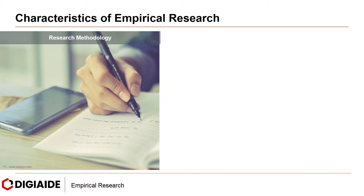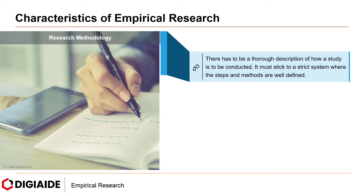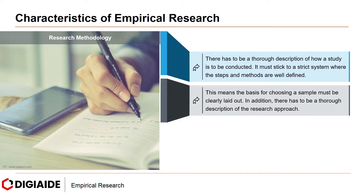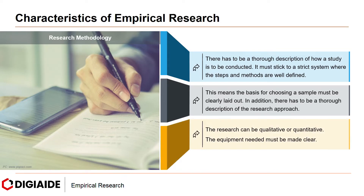Moving on to next, research methodology. There has to be a thorough description of how a study is to be conducted. It must stick to a strict system where the steps and methods are well defined. This means the basis for choosing a sample must be clearly laid out. In addition, there has to be a thorough description of the research approach. The research can be qualitative or quantitative as discussed earlier. The equipment needed must be made clear.